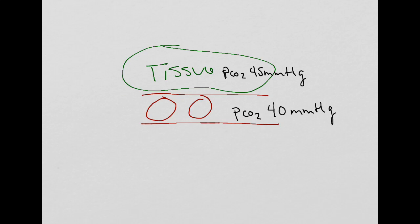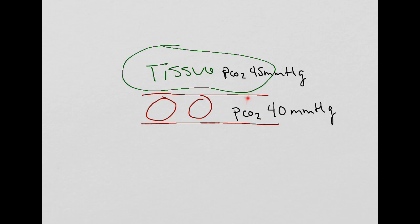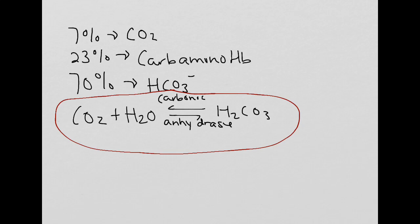And so the CO2 doesn't just come into the capillary and undergo this conversion. That CO2 has got to come into the red blood cell in order to be converted into carbonic acid. That carbonic acid then will immediately break down into the bicarbonate ion and a proton.